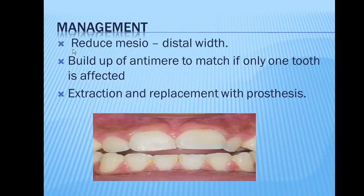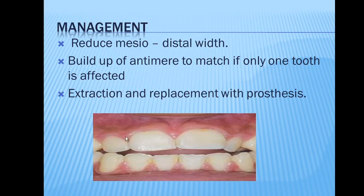In terms of management, we reduce the mesiodistal width of the enlarged tooth. If the opposite tooth — the antimere — is smaller than the large one, we build it up so both teeth appear the same size.